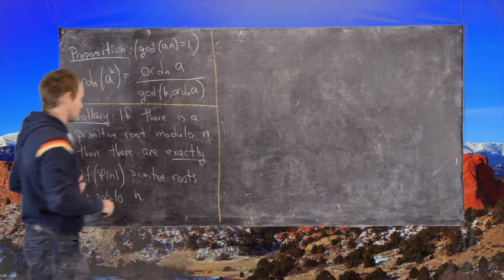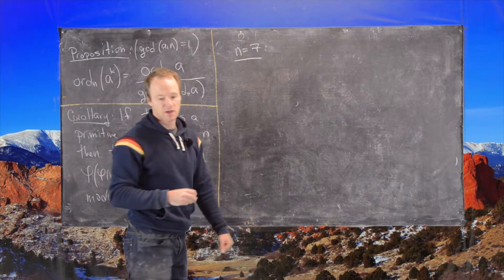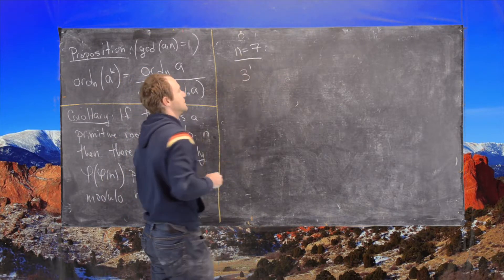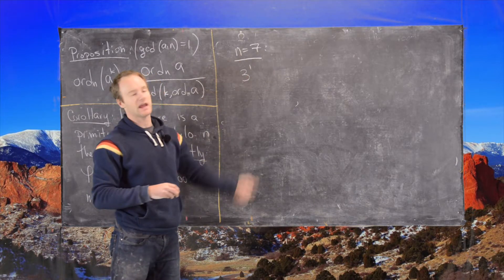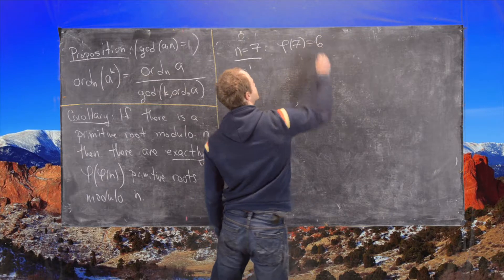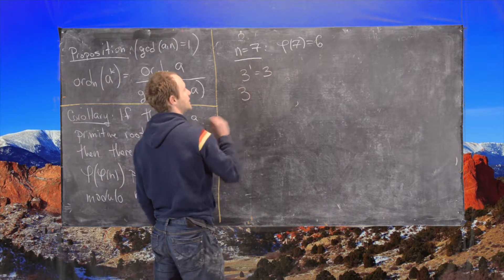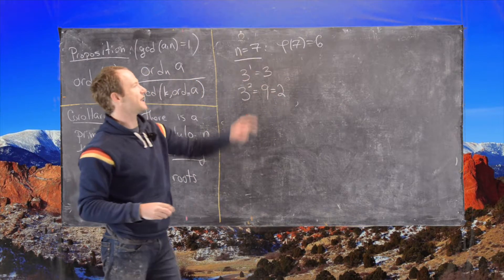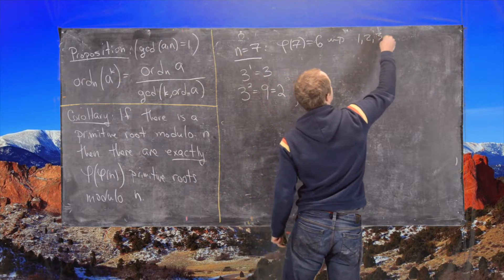In this example, based on the corollary we just proved, we want to find all primitive roots for n = 7. We first show a primitive root exists. In a previous video we saw that 2 is not a primitive root because 2³ = 8 ≡ 1 mod 7, so the order of 2 is 3, but we're looking for order 6. So we'll look at 3. The possible orders are 1, 2, 3, and 6, since those are all divisors of 6.